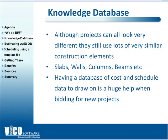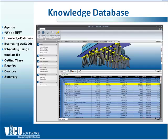Here's an example of a very early stage model — you can only see that the foundations have actually been modelled in any detail. But because you've got a database backed up, you've already got assembly data, production data, and costs for pile caps and grade beams. So you can automatically get a detailed estimate from a low level of detail model.